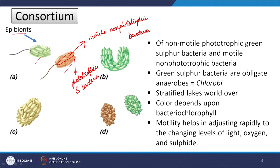The benefit for the phototrophic bacteria is mobility — they get carried to better areas. What is the non-phototrophic bacteria gaining from this relationship? The obvious answer is food. The phototrophic bacteria convert light into food and share this food with the motile non-phototrophic bacteria. So it is almost like a bus ride that they get — but once they have reached a nutrient-rich area, they do not detach very quickly, because the need to move again might arise very soon.